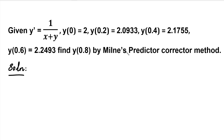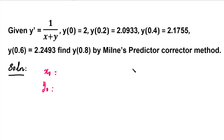If we apply this method, we will use the previous three values. That is, we will use the initial condition of x0 and y0. We will use three values for Milne's Predictor and Corrector formula.